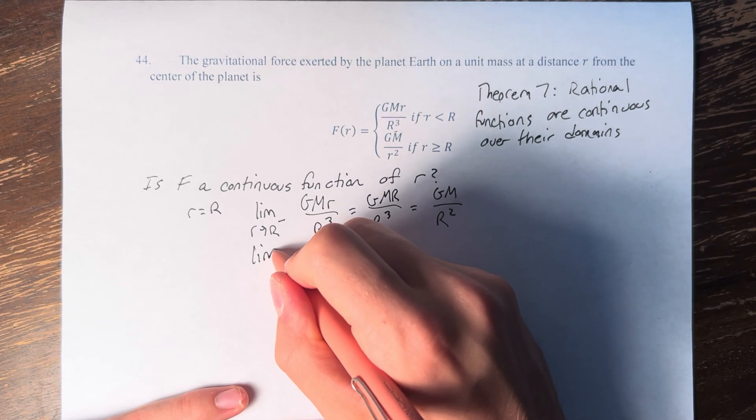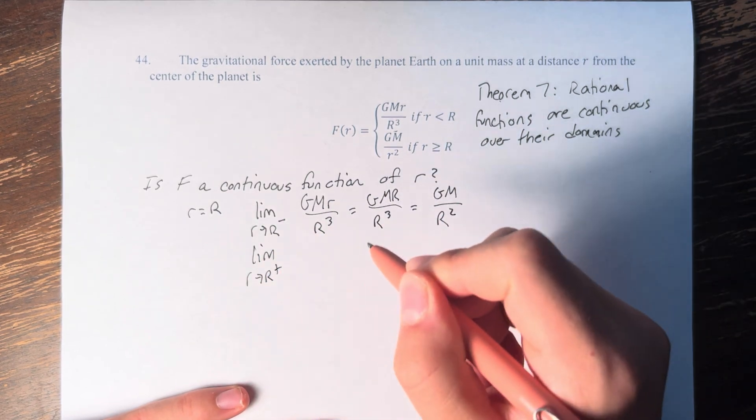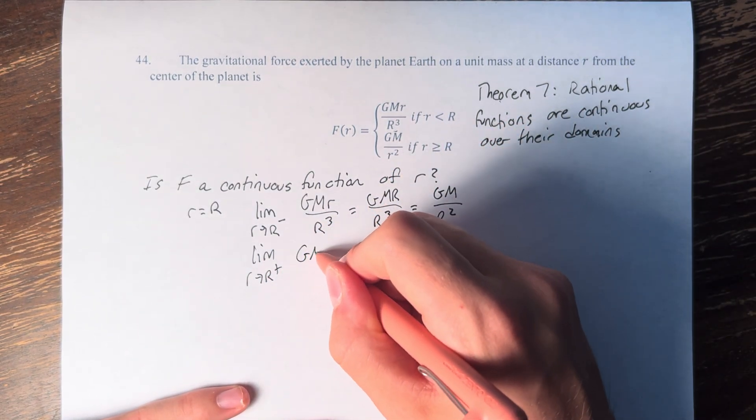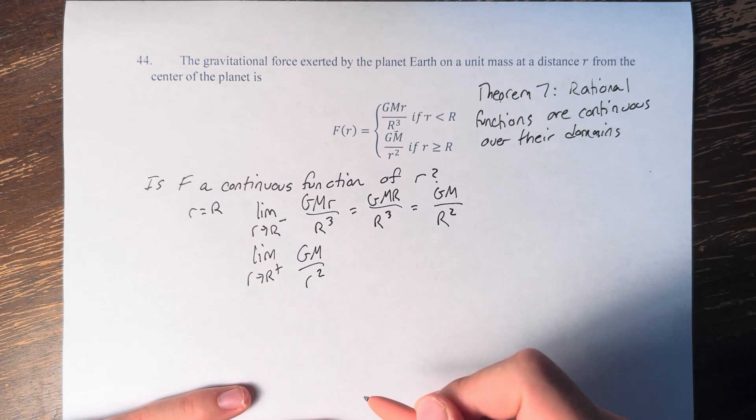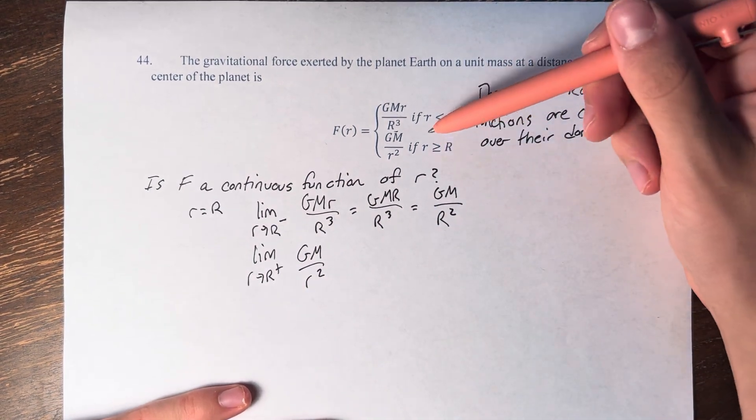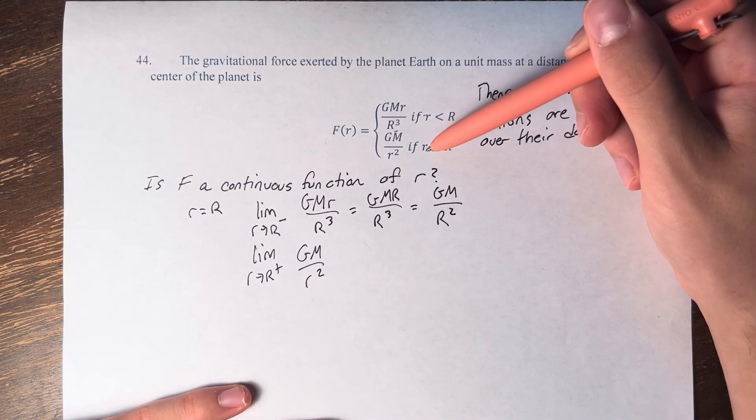And if we want the limit as r approaches R from the right, that's going to be taking on GM over little r squared, because that is for values of little r that are greater than or equal to big R.